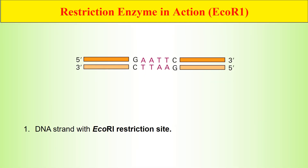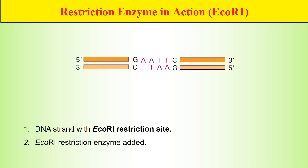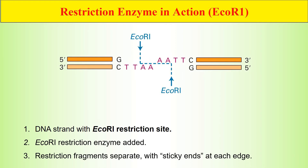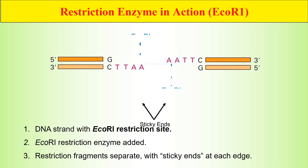Now let's see how restriction enzymes work. This is a specific DNA sequence which has the restriction site for EcoRI. G-A-A-T-T-C is the recognition site for EcoRI restriction endonuclease enzyme. EcoRI will recognize this site and ultimately cleave between the G and A sequence, and after cleavage it produces sticky ends.